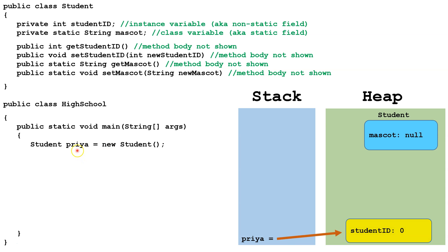Our first line of code declares a Student variable Priya and points it at a new Student. So we put the reference variable Priya on the stack and it points to a new Student object on the heap. The instance variable studentID is there, defaulted to zero because int fields default to zero. We also have our class variable mascot kept separate — since mascot is a String which is an object, it defaults to null.